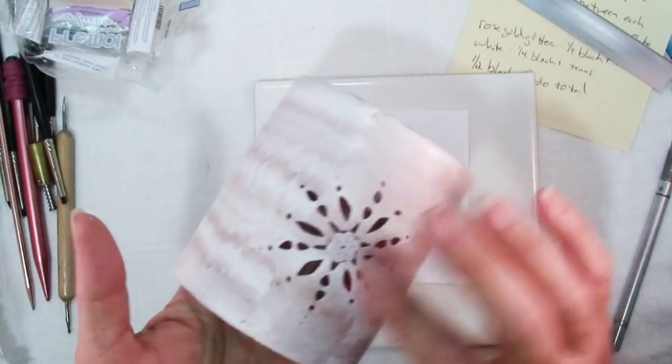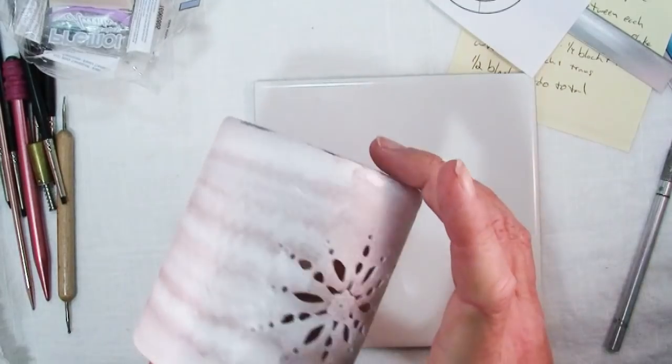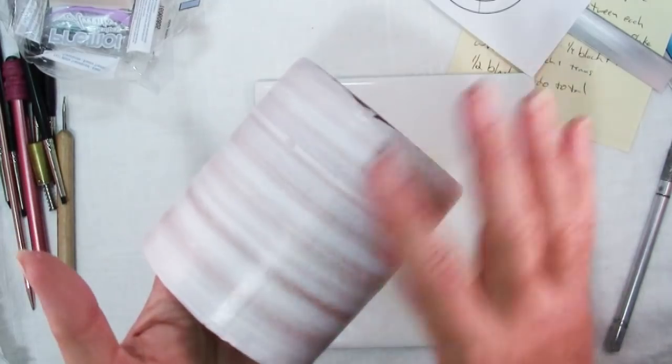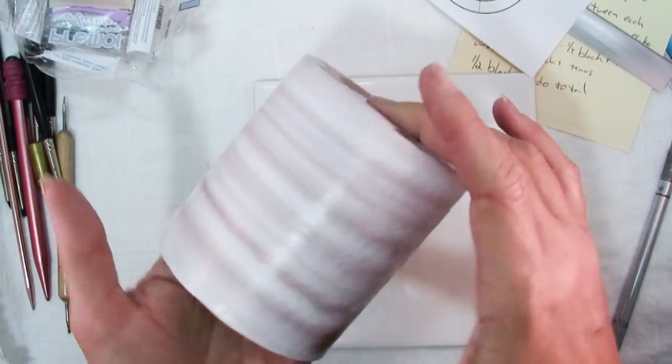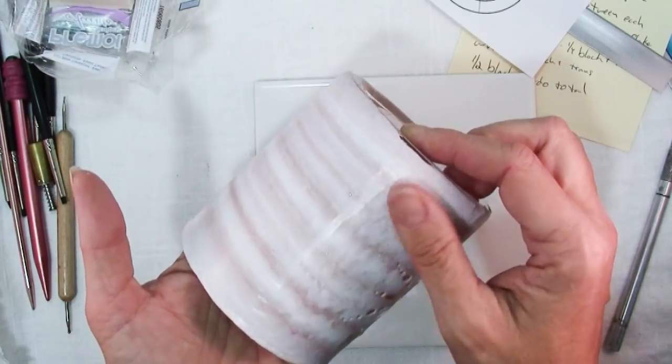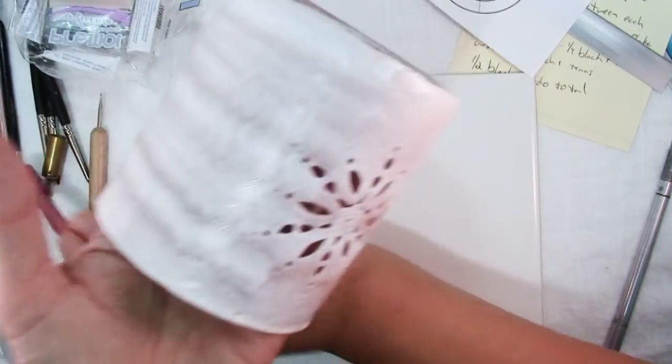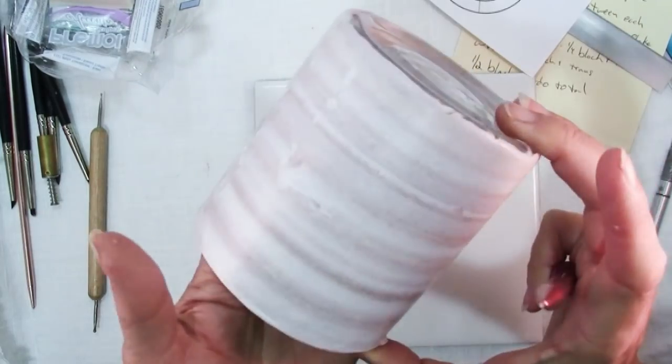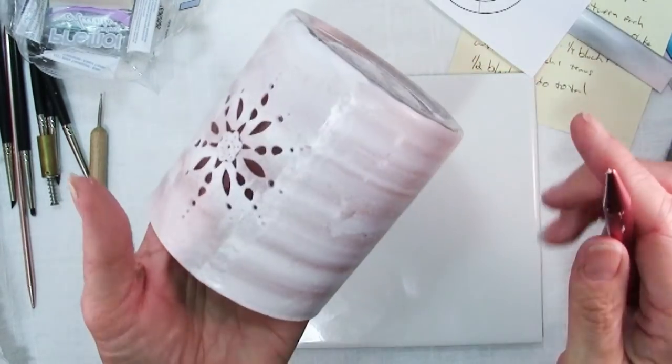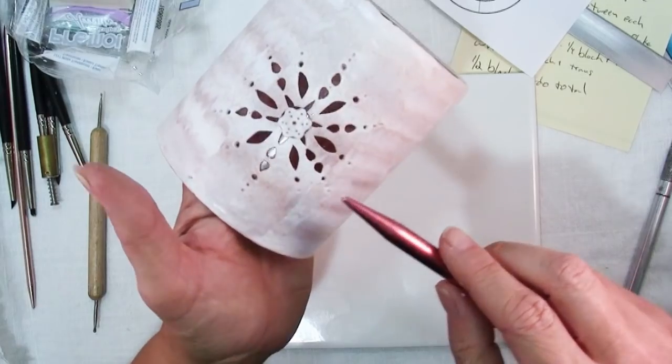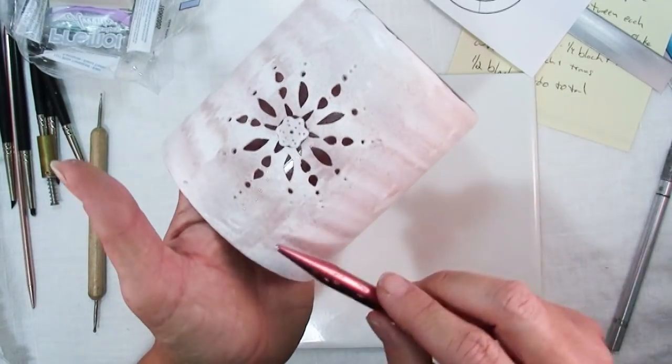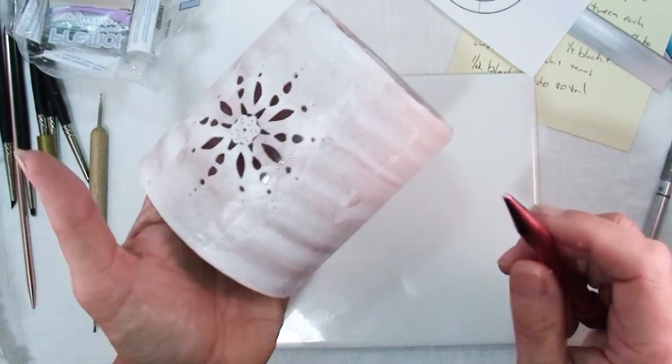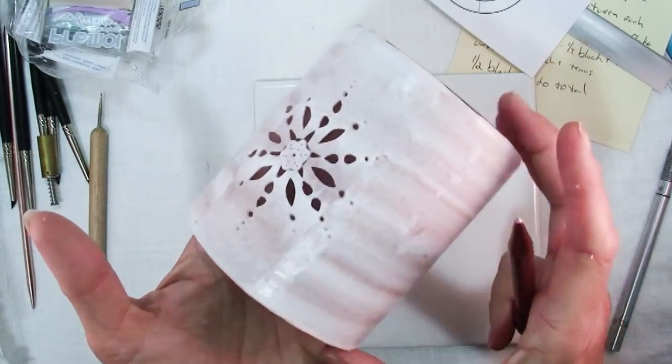Now before we get started, here's one snowflake I already made. You'll notice that this part of my design has got the straight stripes from going through the pasta machine. But this part doesn't because I thought it just looked a little bit more interesting to have it kind of wavy. It also helped to obscure the seam. Actually this snowflake I did right at the seam.